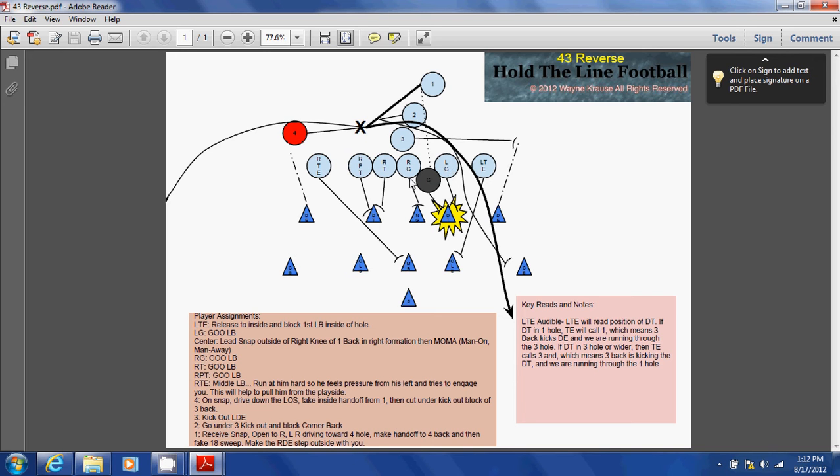The right tight end and left tight end both make their four and six and one and three calls respectively. But this time the one and three call made by the left tight end is absolutely critical because it determines who the three back is going to be blocking on this side and also which hole the four back will be running through.